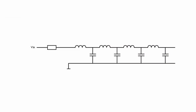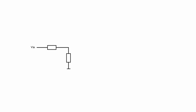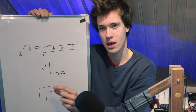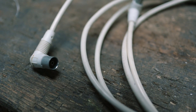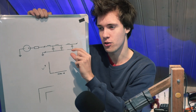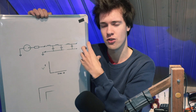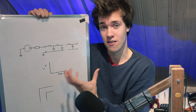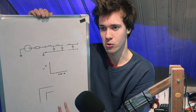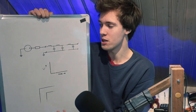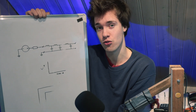As seen from the voltage source, it just looks like we've hooked up a resistor to it, because the current just keeps going. The value of that virtual resistor representing this infinitely long cable is the characteristic impedance of the cable. If you have a coax cable used to hook up a TV, you might have seen it says characteristic impedance 50 ohms or 75 ohms — that means if that cable was infinitely long, that would be the impedance the voltage source would see at the very start.